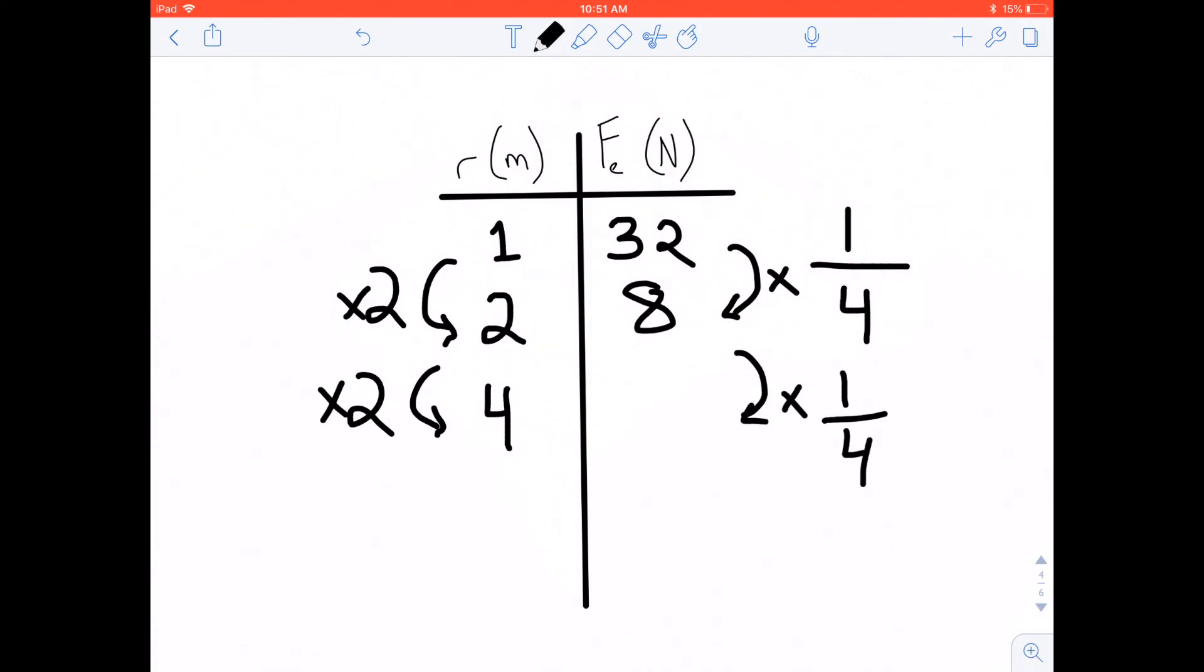We just doubled that distance. And we're going to quarter the force. We're going to quarter the force. Eight times one fourth, eight quartered, is two. So, we can see that as we double the distance, we quarter the force. That's the pattern there.